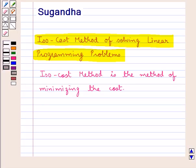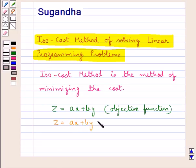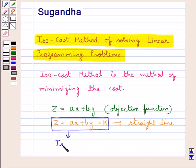In the isocost method we are given an objective function z equal to ax plus by and we assign an arbitrary chosen fixed value k to this objective function z. This represents some straight line and this straight line is called the isocost line.